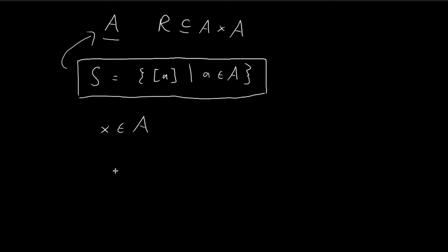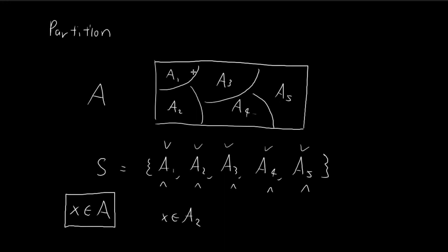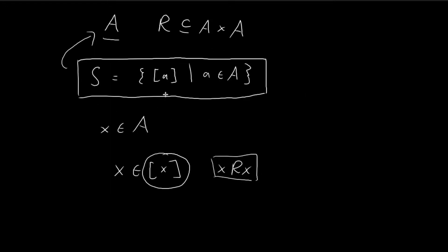First, we notice that X is a member of the equivalence class of X. This is true because X must be related to X, which holds since R is reflexive — a property guaranteed by R being an equivalence relation. We also know that the equivalence class of X is a member of S, since S contains all equivalence classes. This shows that X must belong to at least one of the sets in S, completing the first half of our proof.